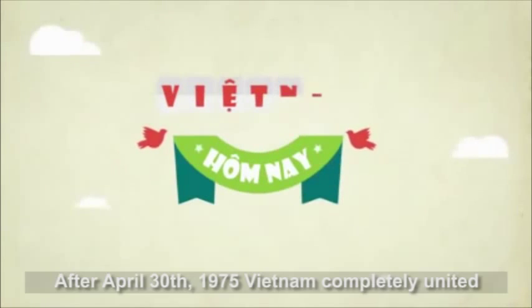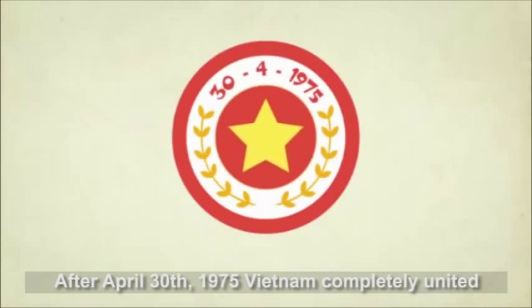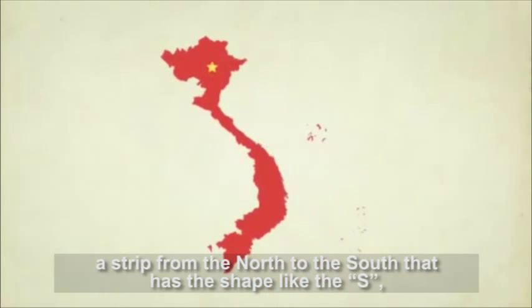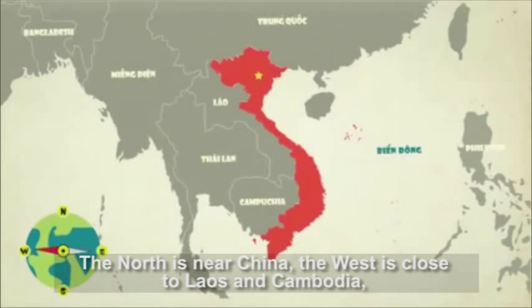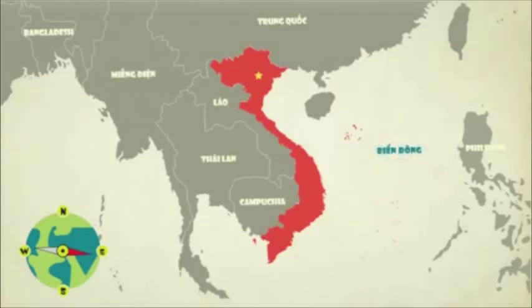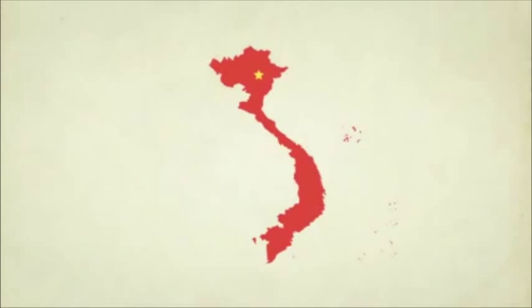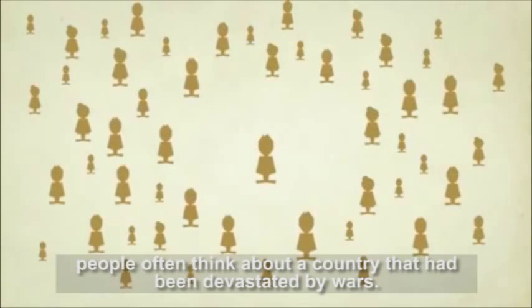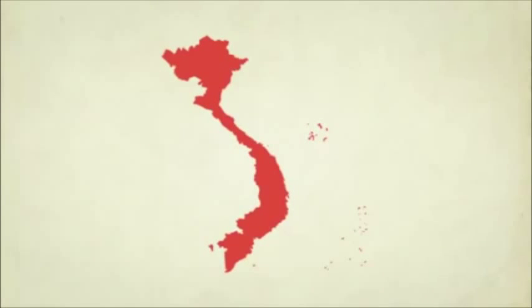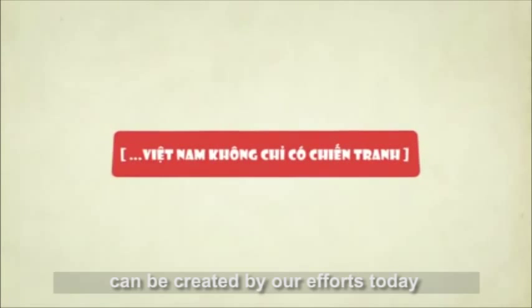Vietnam Today — after April 30, 1975, Vietnam was completely unified. The strip from north to south, shaped like an S, is wide at the two heads — north and south — and long and narrow in the center. The north borders China, the west borders Laos and Cambodia, and the east and south face the East Sea. Vietnam is located in Southeast Asia. Despite being a small country with a moderate area, the S-shaped country has become known around the world — though this was a difficult and hard-earned process. Today the war is ended, but when referring to Vietnam, people often think of a country devastated by wars. A newer and better image of Vietnam can be created by our efforts today, because Vietnam is not only about war.